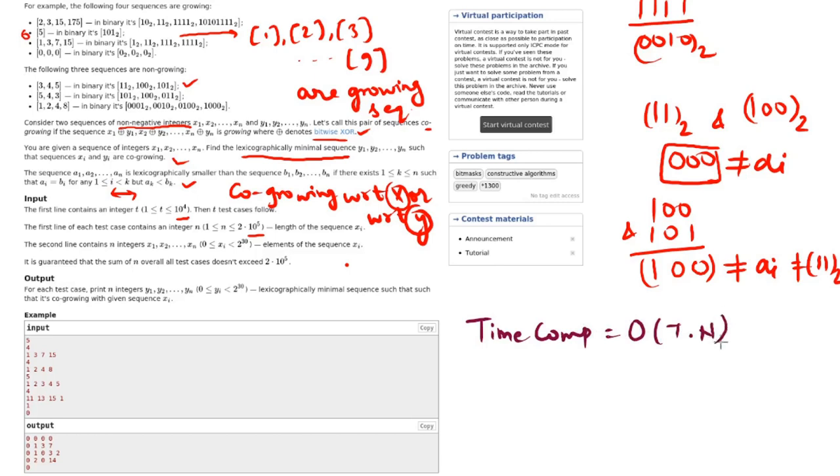This should be the maximum complexity for this problem. And here it is guaranteed that this sum cannot exceed 2 × 10^5 for all test cases. Now we found out these are the questions. Now let us move towards the explanation part.